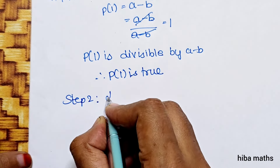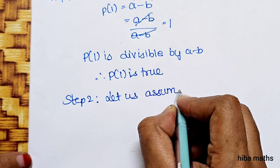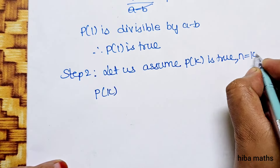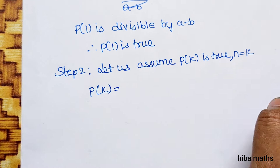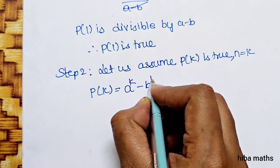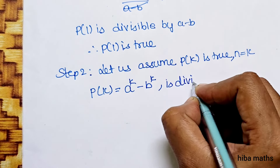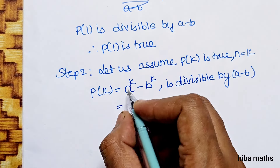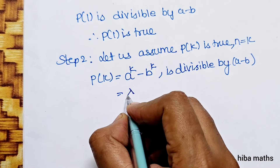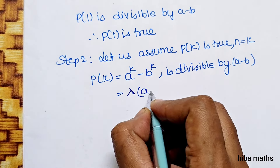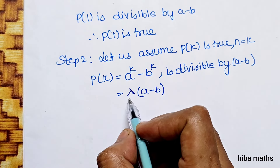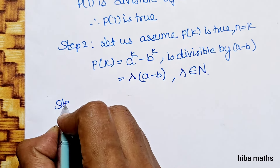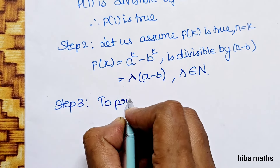Step 2: Let us assume P(k) is true. So P(k) states that a^k minus b^k is divisible by (a minus b). We assume a^k minus b^k equals lambda times (a minus b).